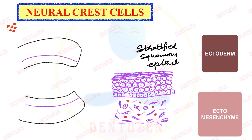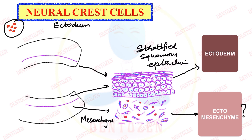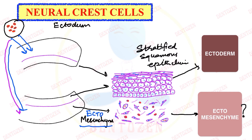Below the ectoderm we have another layer — ectomesenchyme. It is called ectomesenchyme because it is a special type of mesenchyme. The mesenchymal cells here have neural crest cells mixed into them. Some neural crest cells, which are ectodermal in origin, migrate to the oral region mesenchyme and get mixed with the mesenchymal cells — so these mesenchymal cells are called ectomesenchyme. That is another viva question. These two layers help in the formation of different parts of the tooth: ectoderm gives rise to enamel, and ectomesenchyme forms dentine, pulp, and cementum.